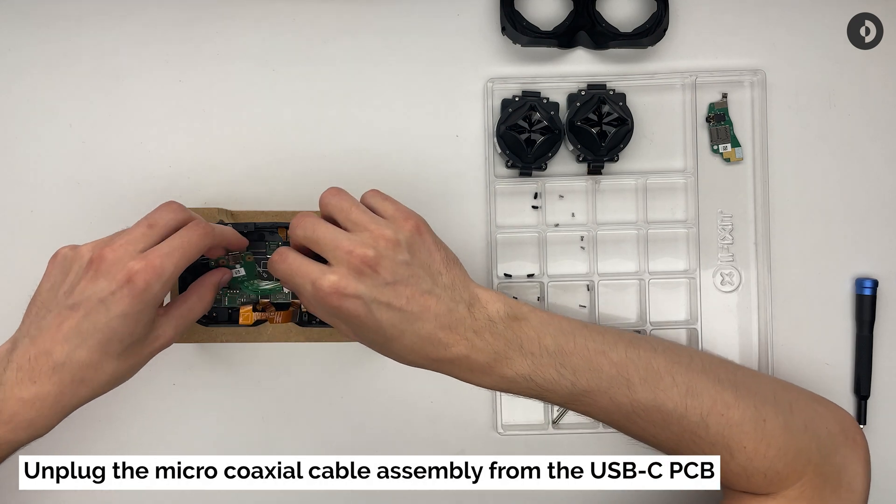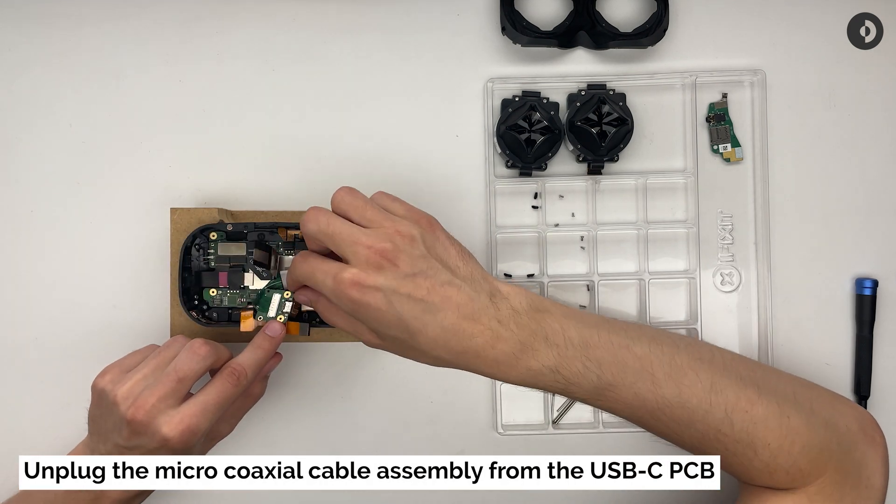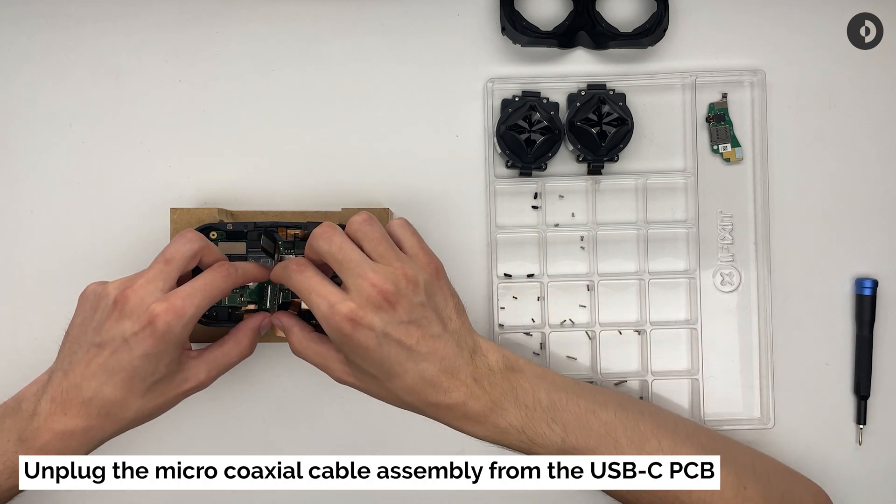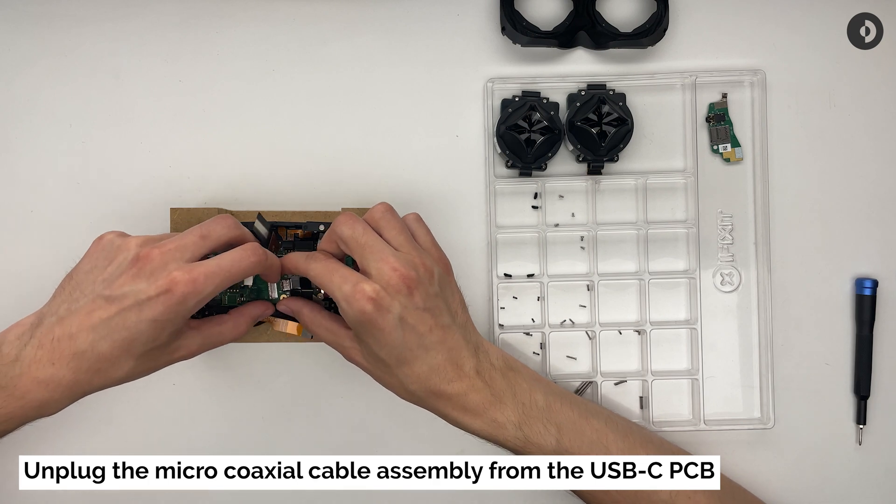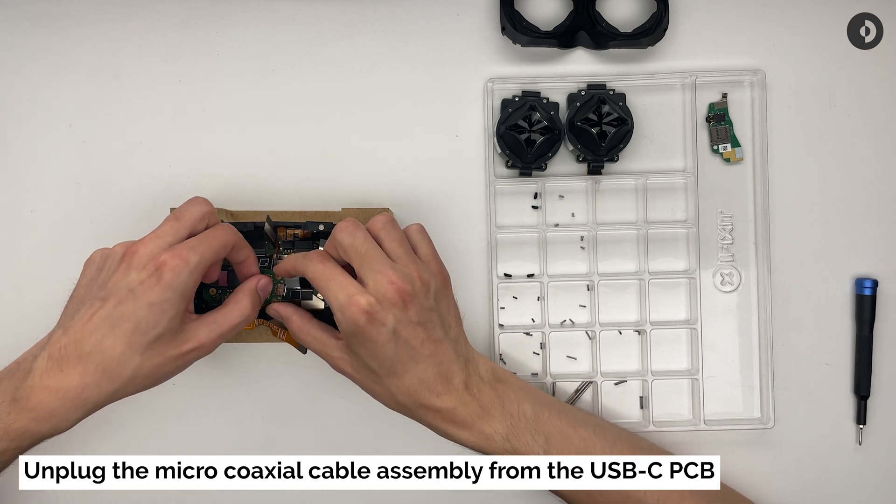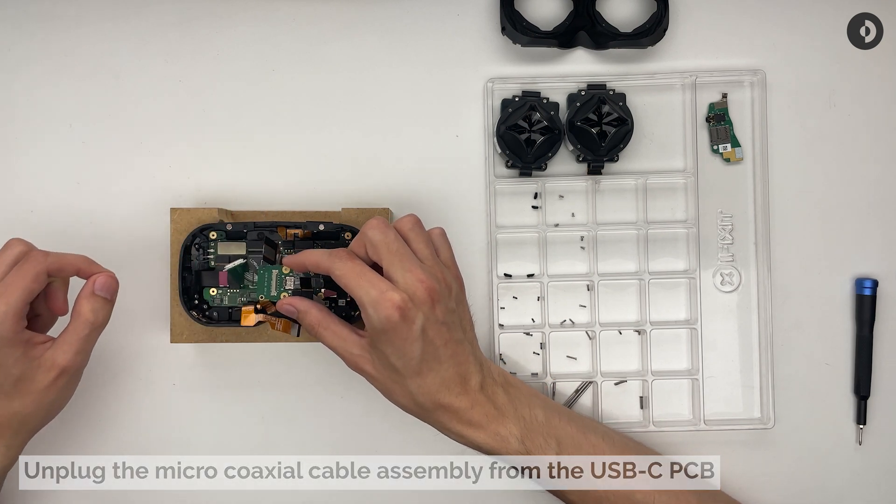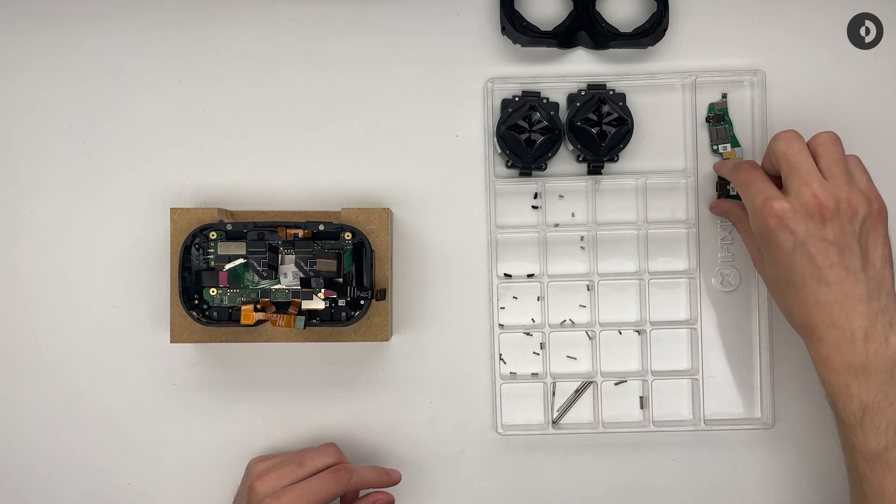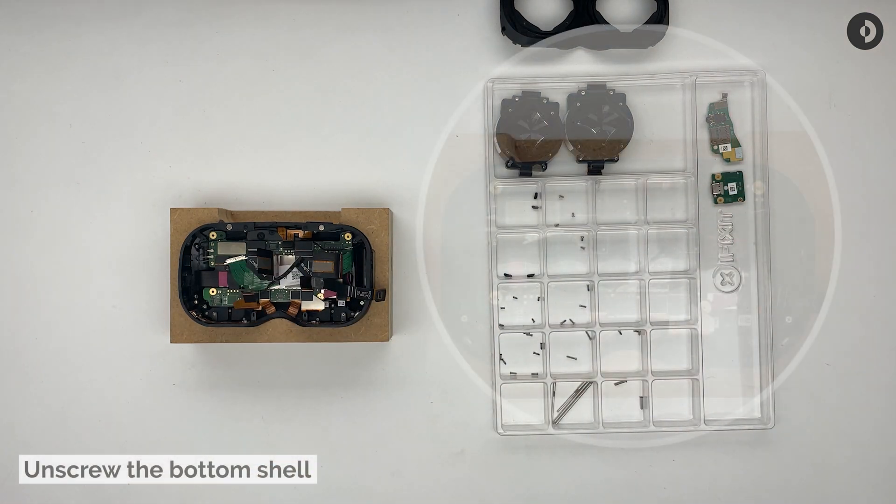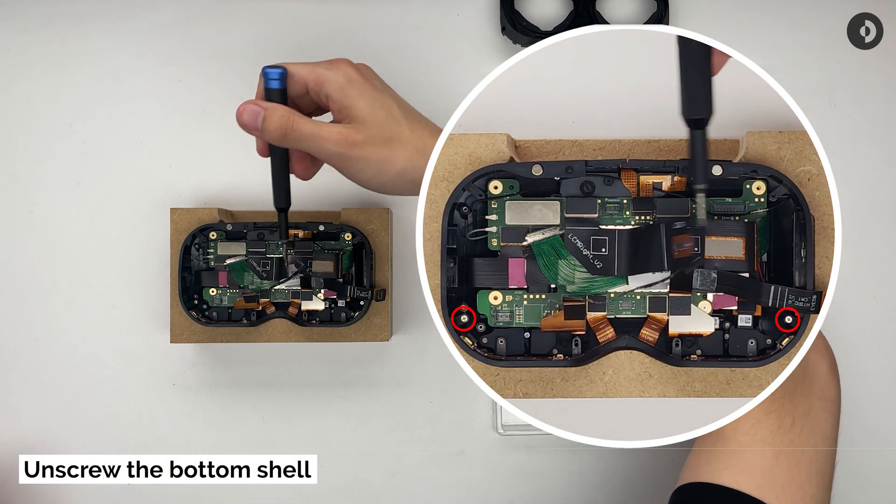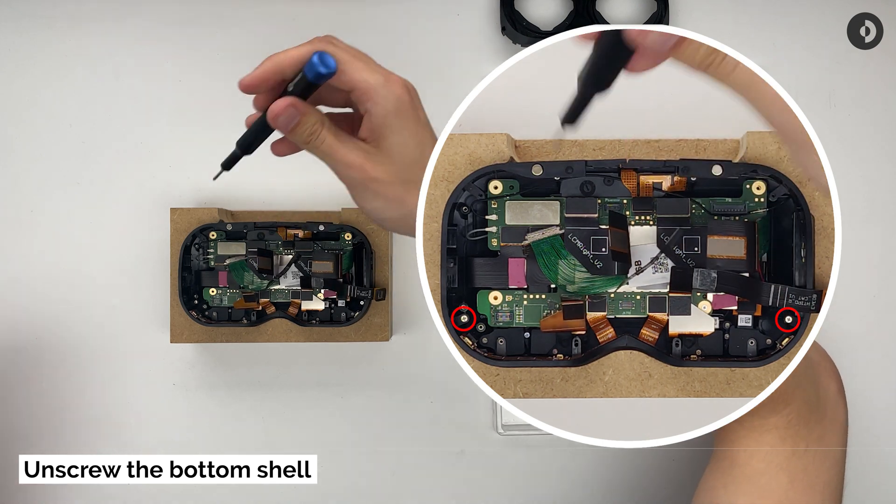Disconnect the USB PCB by disengaging the coaxial cable as such. Once that's taken care of, unscrew the last two remaining screws holding the shells and the faceplate together.